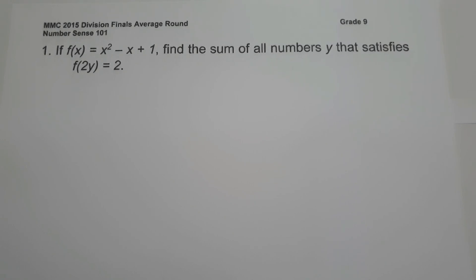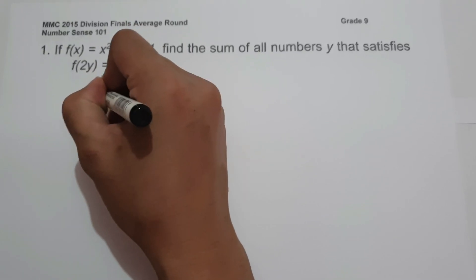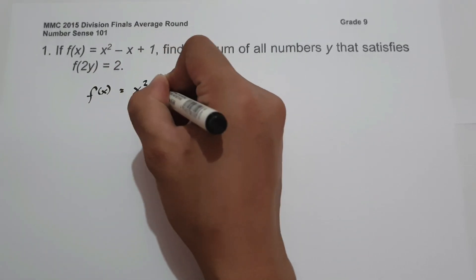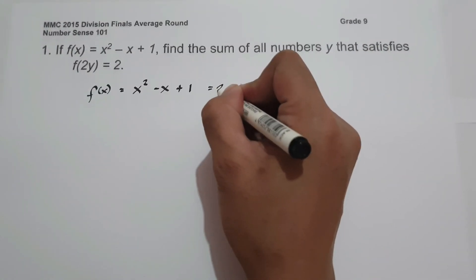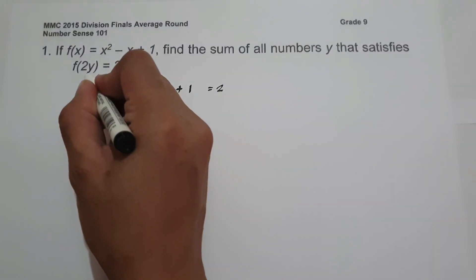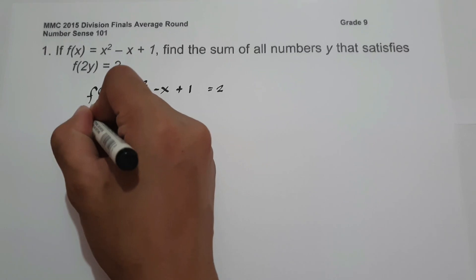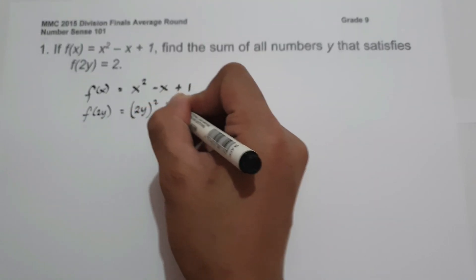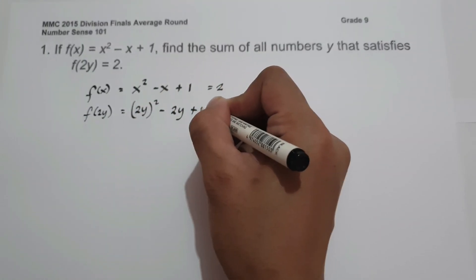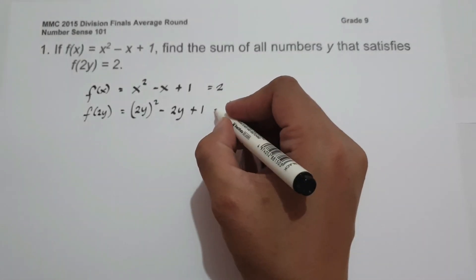On number 1, if f of x equals x squared minus x plus 1, find the sum of all numbers y that satisfy f of 2y equals 2. To find the sum of all numbers y, let us have f of x equals x squared minus x plus 1, and the value of this expression is equal to 2 if we substitute x with 2y. So let us have f of 2y equals 2y squared minus 2y plus 1 equals 2.